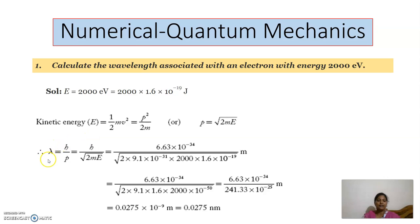We know the formula lambda equal to h by p in the de Broglie wavelength, and we have seen the different expressions of de Broglie wavelength. We can write this h by p as h by root of 2mE in terms of kinetic energy, since p is equal to root of 2mE. So lambda is equal to h by root of 2mE is the formula to use here.